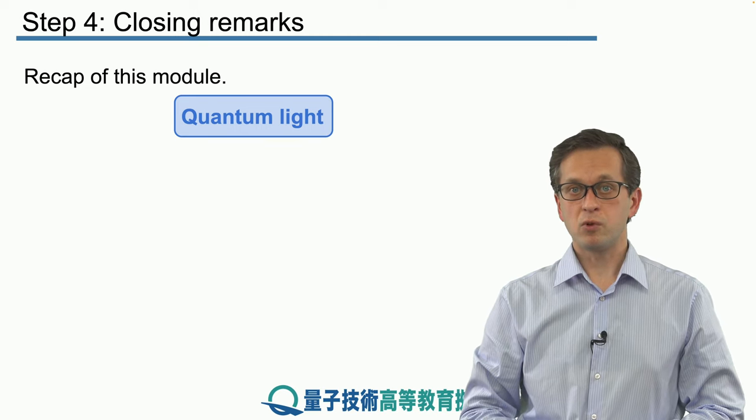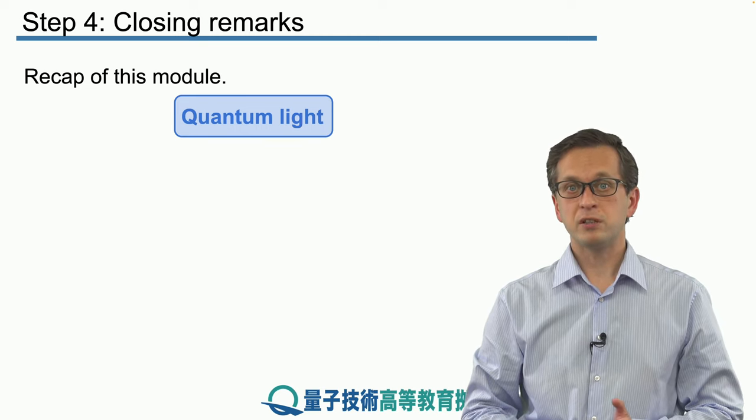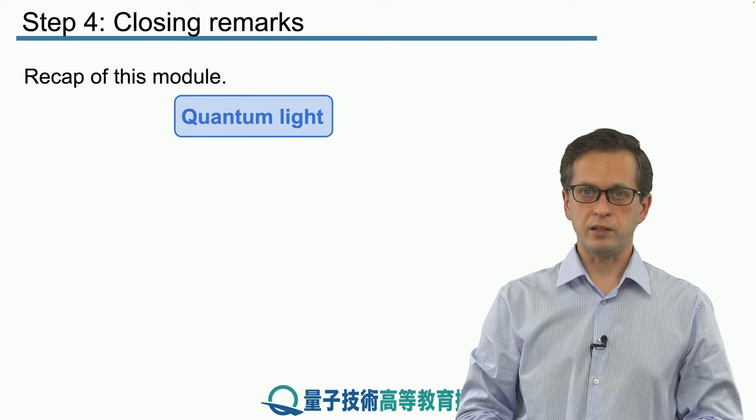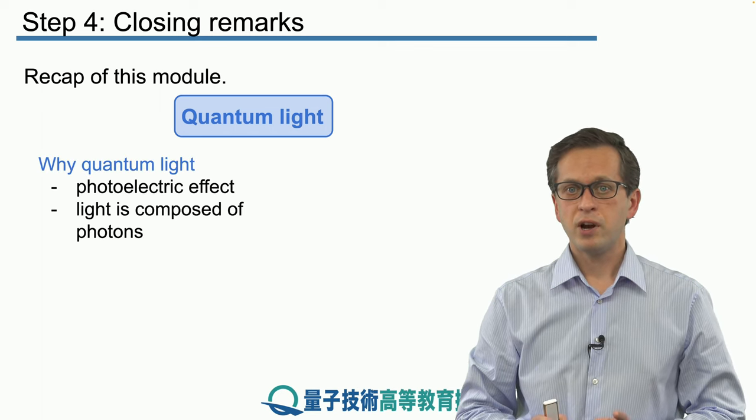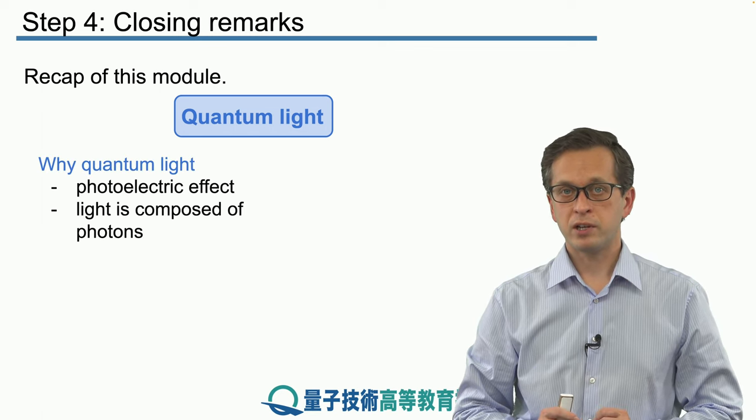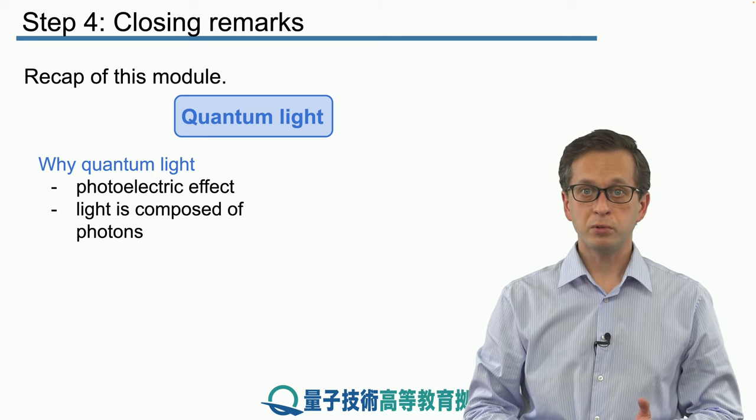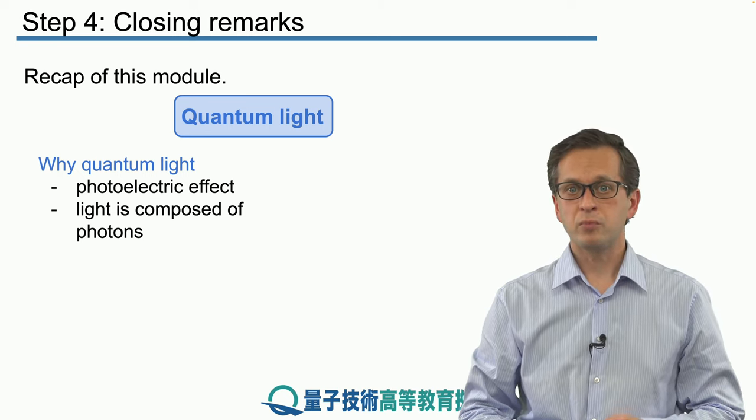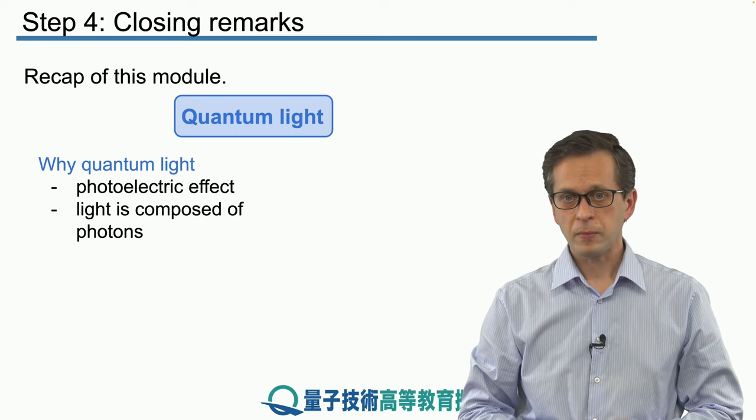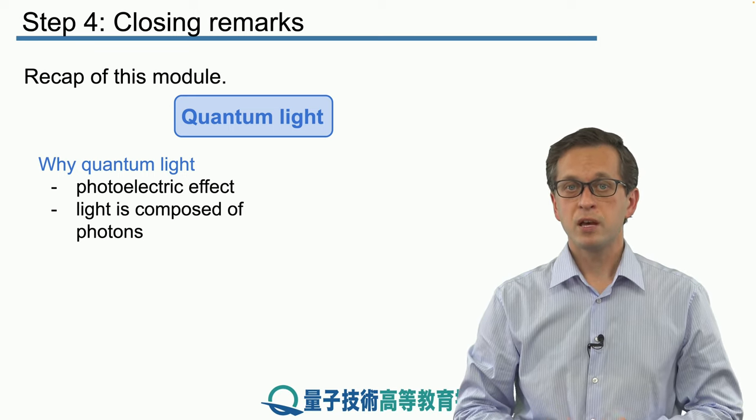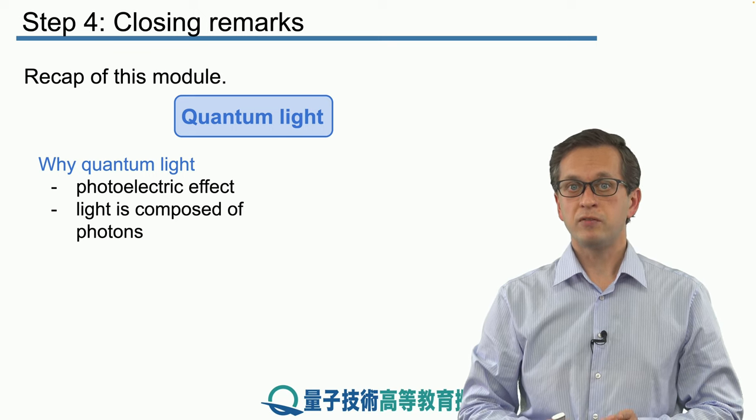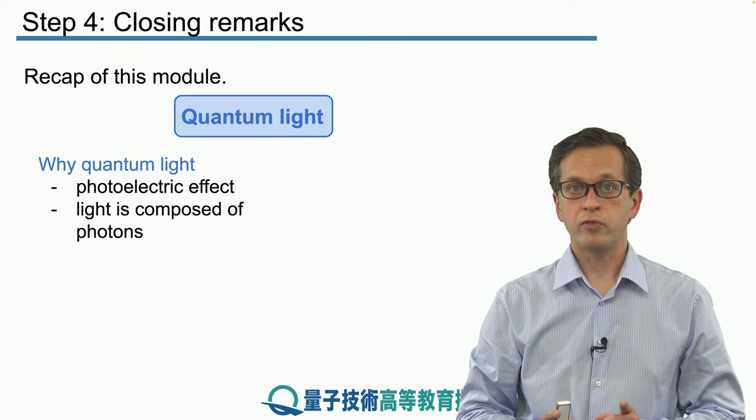Then, we switched to quantum light. The first question we answered was, why quantum light? We saw that trying to apply our knowledge of classical electromagnetic fields to observable effects, such as the photoelectric effect, we encountered many problems. We saw that we can solve all of these problems by the simple notion that light is composed of photons.